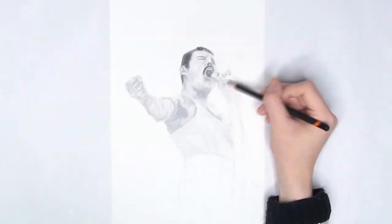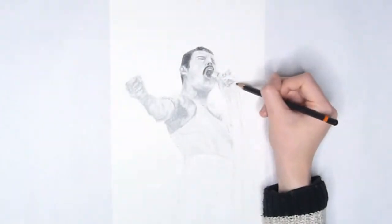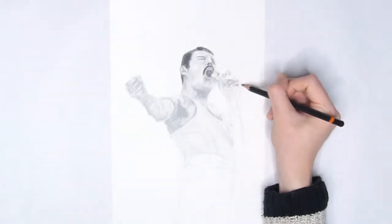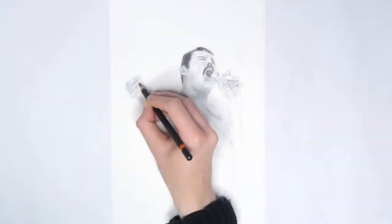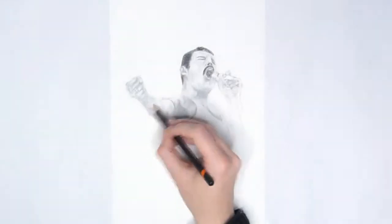I started off drawing the skin first because I knew if the drawing wasn't going to turn out the way I wanted it to, then the skin in their face is where I'd be most likely to make mistakes.